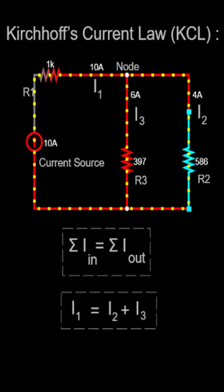This principle is based on the conservation of charge, which tells us the charge cannot be created or destroyed in an isolated system. Therefore, the total amount of current flowing into a junction must be equal to the total amount of current flowing out of that junction.